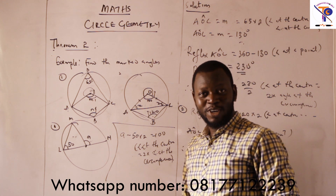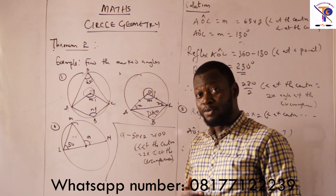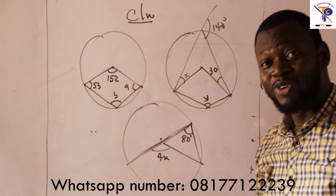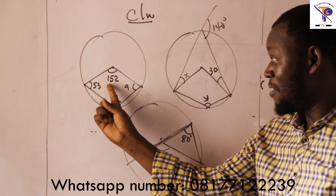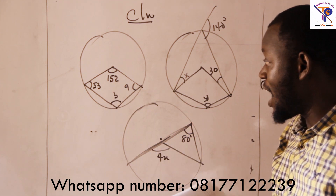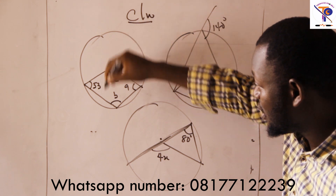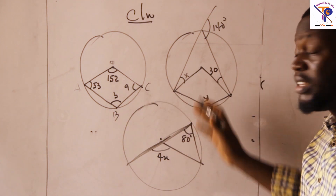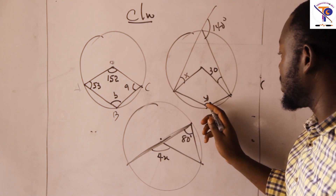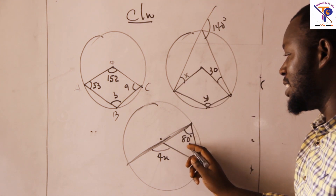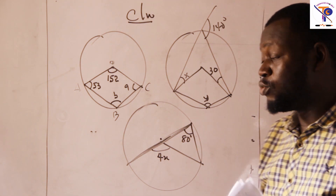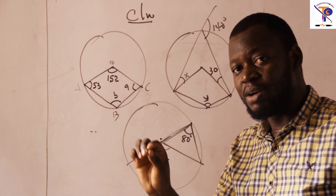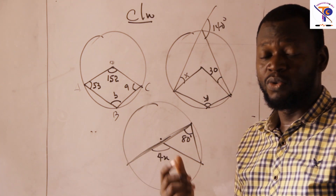So that's everything about angle at the center being twice angle at the circumference. Let me give you classwork so we can see if you actually understood what I've been saying. Look at this — it's simple. We have 152 here, 53 here, then we have angles B and A. Don't forget this is at the center. You can label the points. Then solve: there's X, Y, 140, 4X, and 80. Get a pencil, and as the theorems come to your head, tick them and apply them.